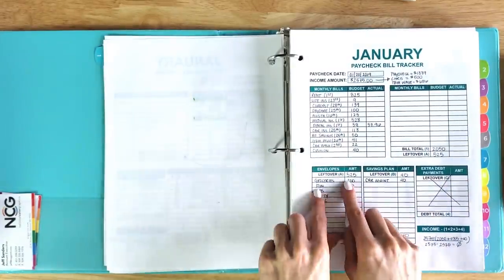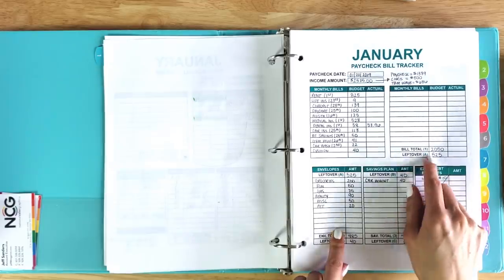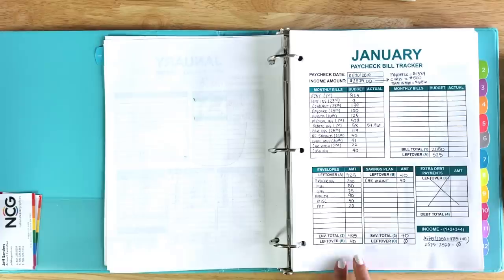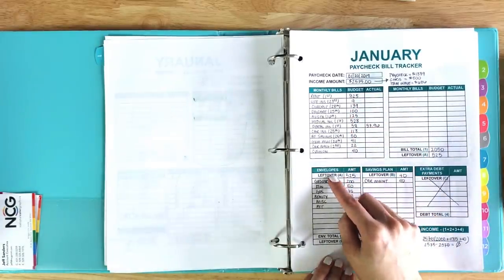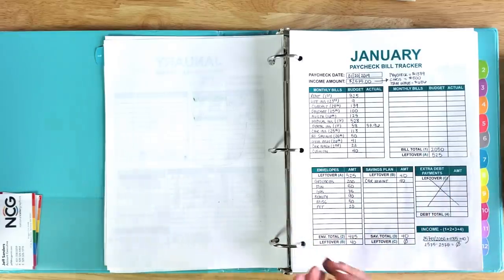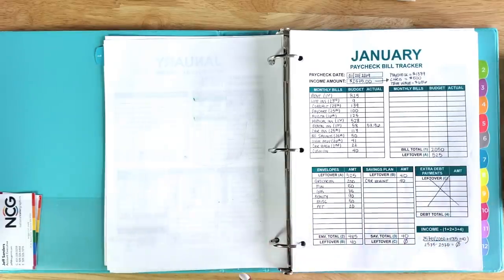I decided, here are my cash envelopes. If I subtract that from the $525 that I had left over after paying my bills online, I'm left with $40. Now I have my bills taken care of, my variable expenses taken care of, and I still have $40 left over. For me, I decided to put that $40 into my car maintenance fund.